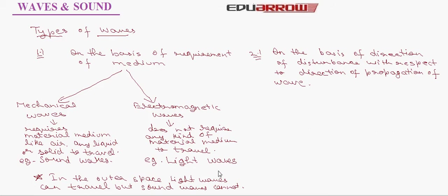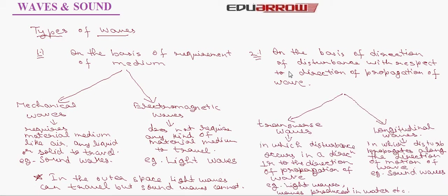There is another basis on which we divide waves. On the basis of direction of disturbance with respect to direction of propagation of wave, the waves are divided into two categories, the transverse waves and the longitudinal waves. Transverse waves are the waves in which disturbance occurs in a direction perpendicular to the direction of propagation of wave. Example, light waves, waves produced in water etc.